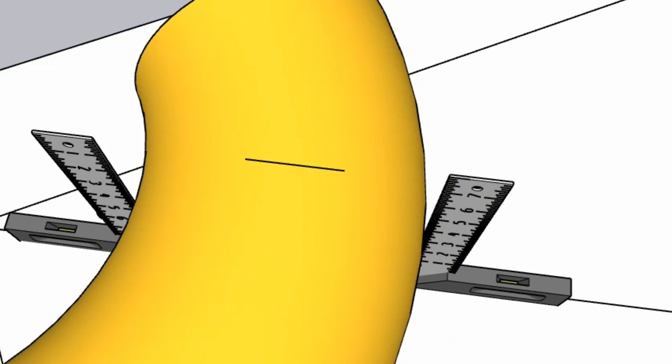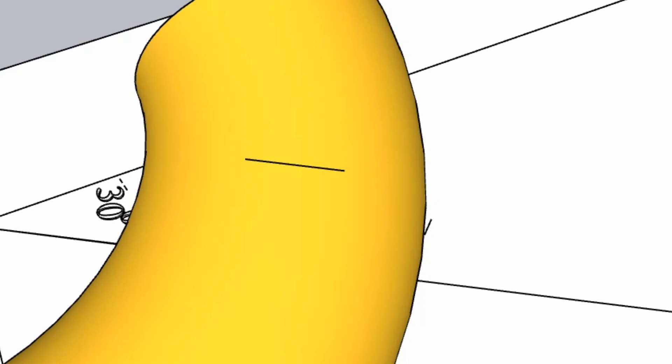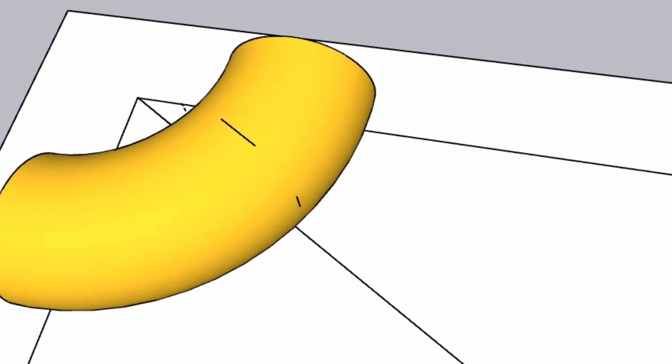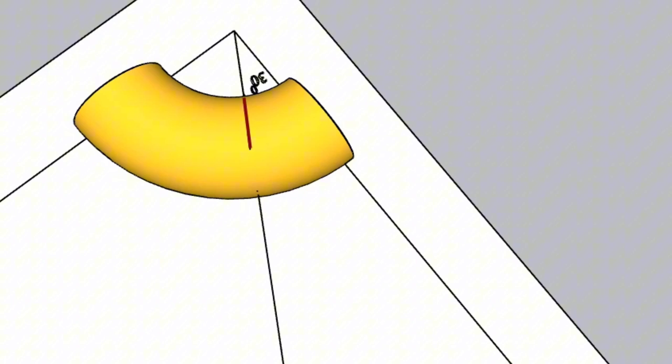In the next step, we connect the places marked on the 90-degree elbow with a whole line. At last we cut the 90-degree elbow along this whole line. The elbow cut at 30 degrees is ready.